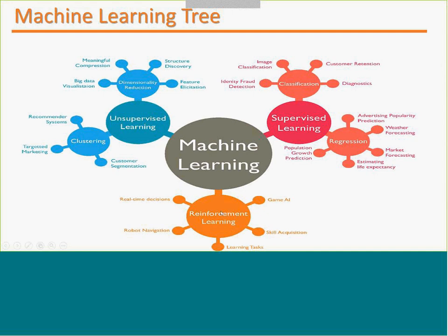Reinforcement learning is used for artificial intelligence game requirements, robot navigation, and real-time decision making. For example, Gmail automatically puts spam emails into a spam folder without asking the user — it knows which emails are spam and does this without any supervision, which is an example of unsupervised learning.